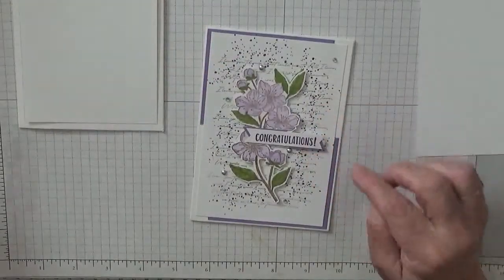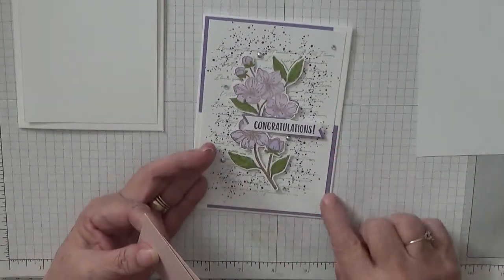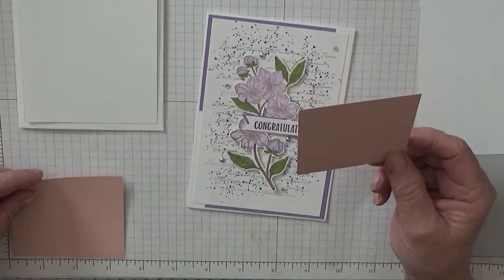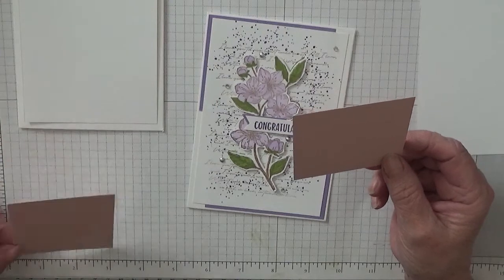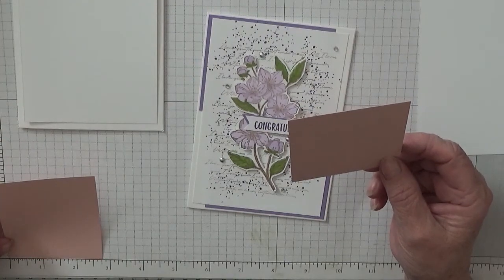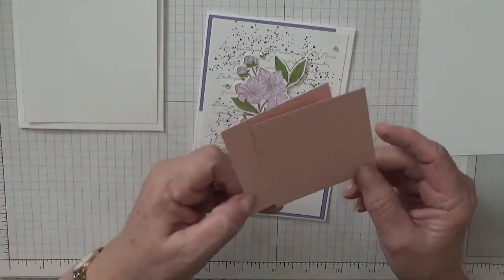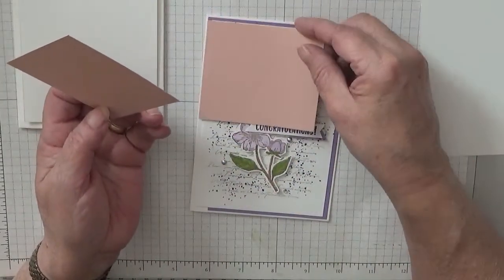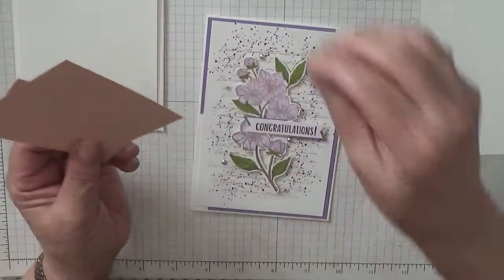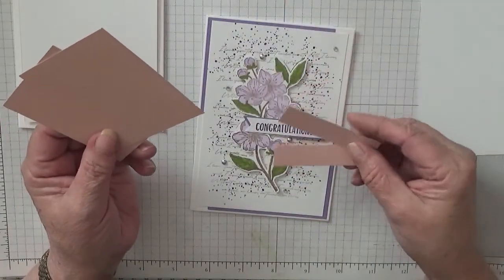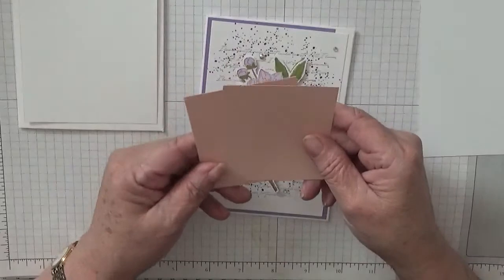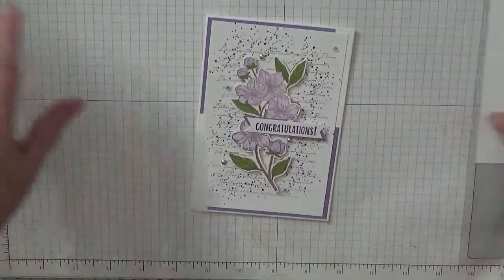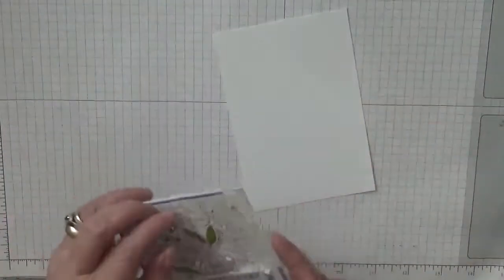You also need some colored card. I've got two pieces of Blushing Bride at 3 1/4 by 2 3/4 that will go in each corner, and some scrap for the sentiment. I'll just put that to the side.